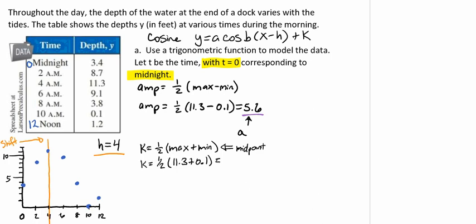For that, we'll be taking half of 11.3 plus 0.1. When we plug that in, that gives us a k value of 5.7.